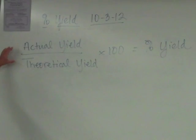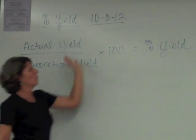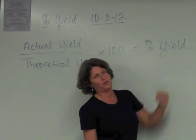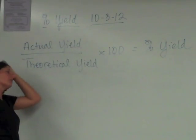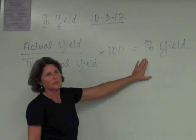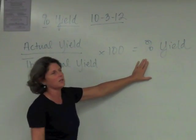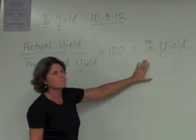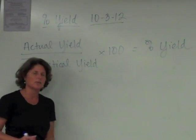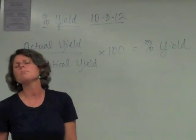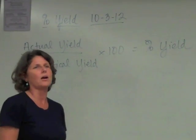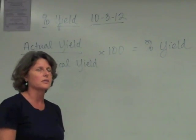What this does is it tells us we should have made this much product, and this is how much we really made. So what percentage are we achieving in our chemical reaction? This number is never going to be 100 percent for lots of reasons. In industrial chemistry labs, you want to make as much product as you can, but many things get in the way of all your reactants being utilized completely.